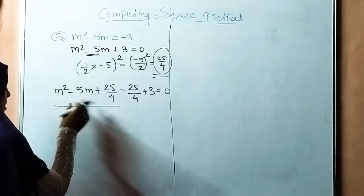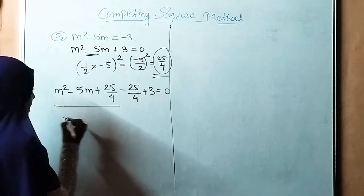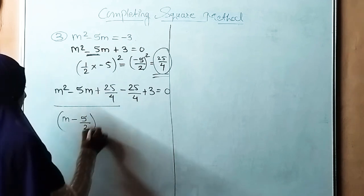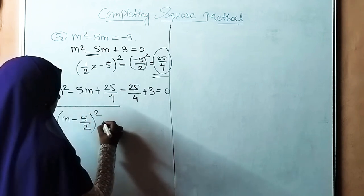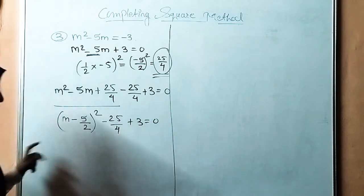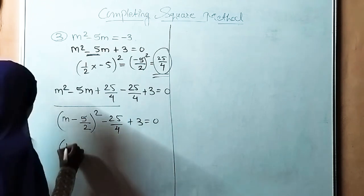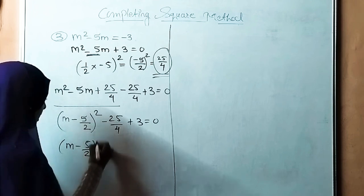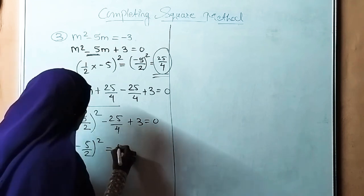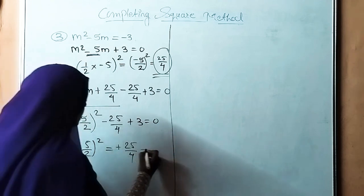Now the equation has a minus sign, so the perfect square form is m minus 5/2 bracket square. Shifting the remaining terms to the right side: m minus 5/2 bracket square equals 25/4 minus 3. We write plus 25/4, then shift minus 3 becomes plus 3 goes to the right becoming minus 3, so the right side is 25/4 minus 3.